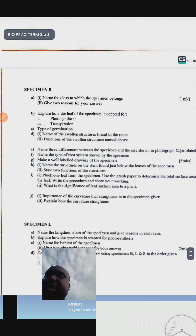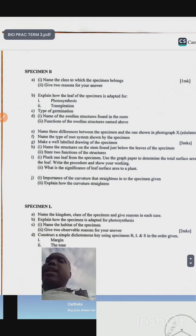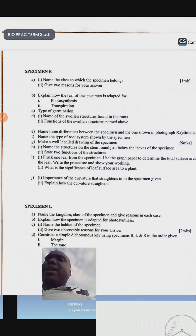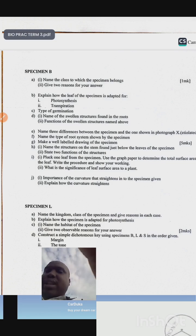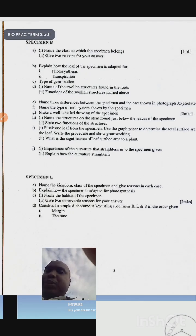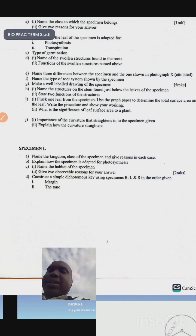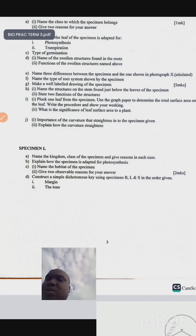Other possible questions: you will be given specimen B, name the class to which the specimen belongs, give the reasons for your answer. Name the kingdom, class of specimen and give reasons in each case. Explain how the specimen is adapted for photosynthesis. Name the habitats of the specimen, give the observable reasons for your answer. Construct a simple dichotomous key using specimen B, L, and S in the order given.